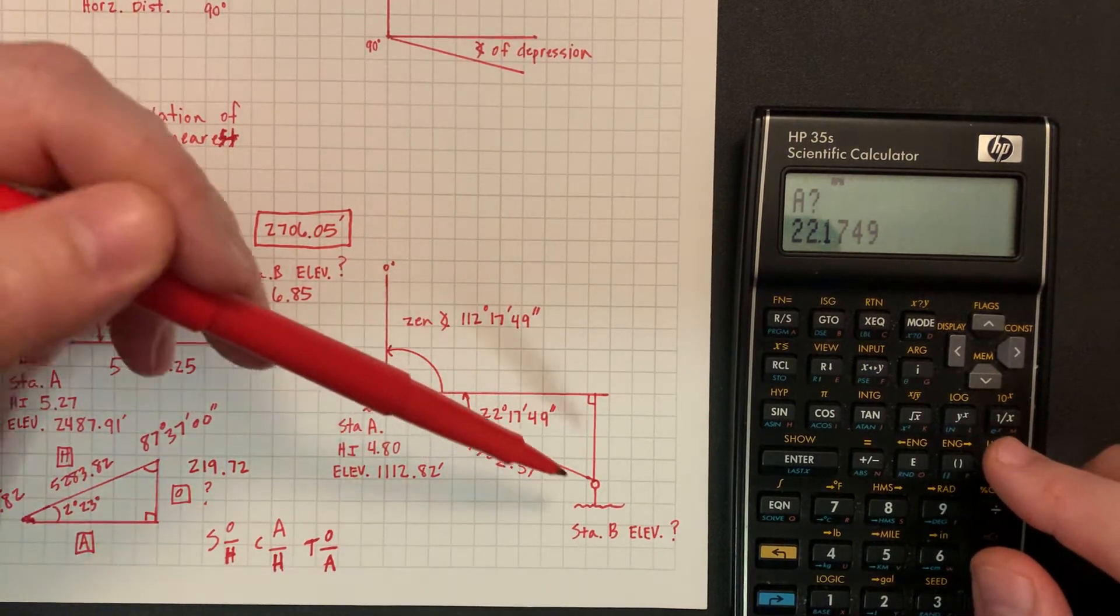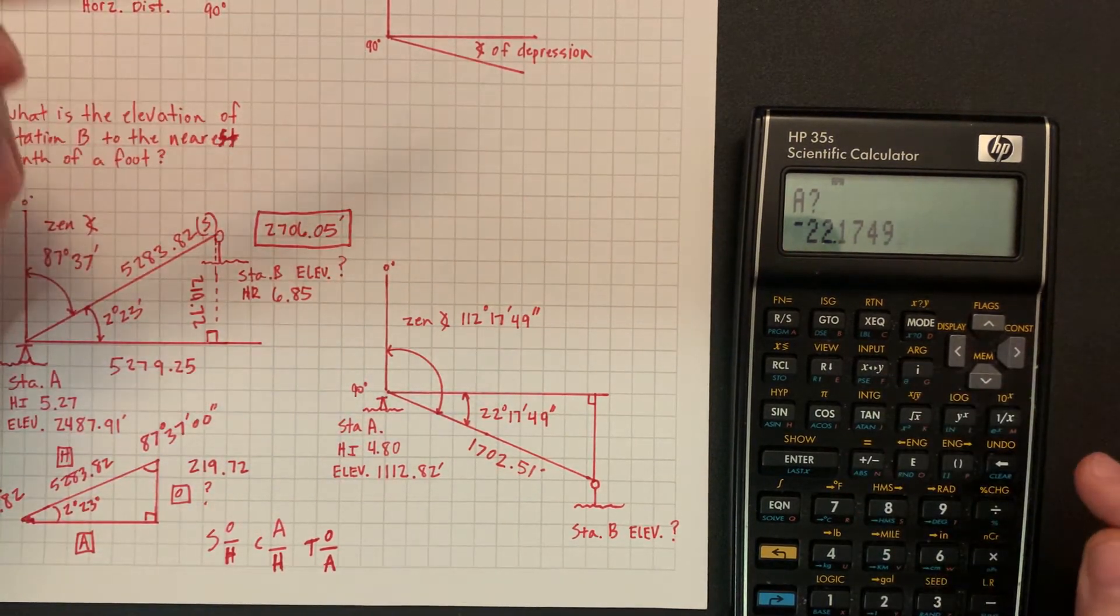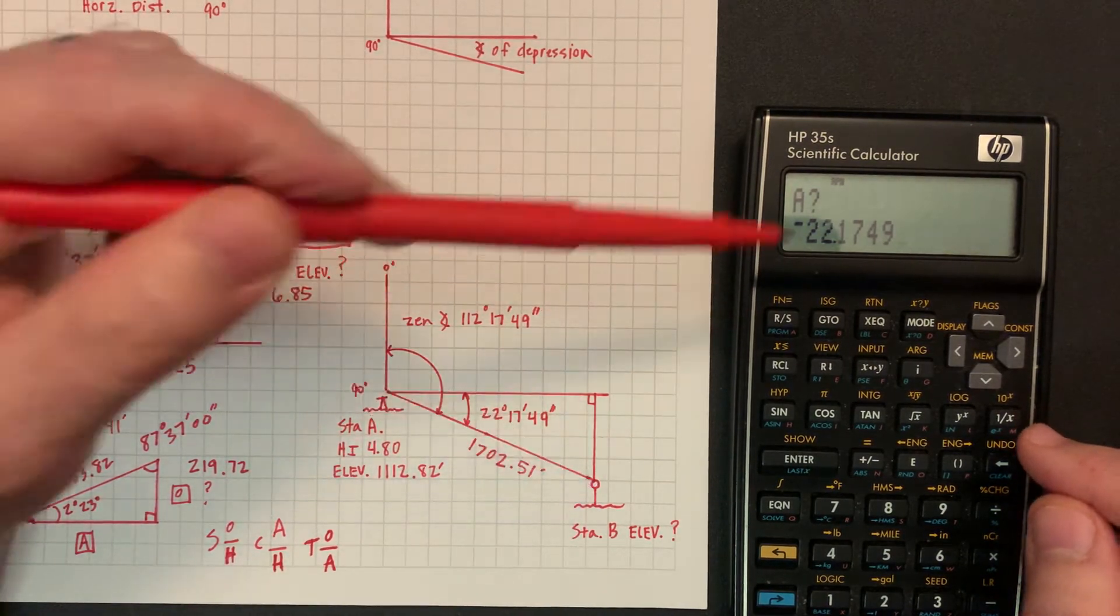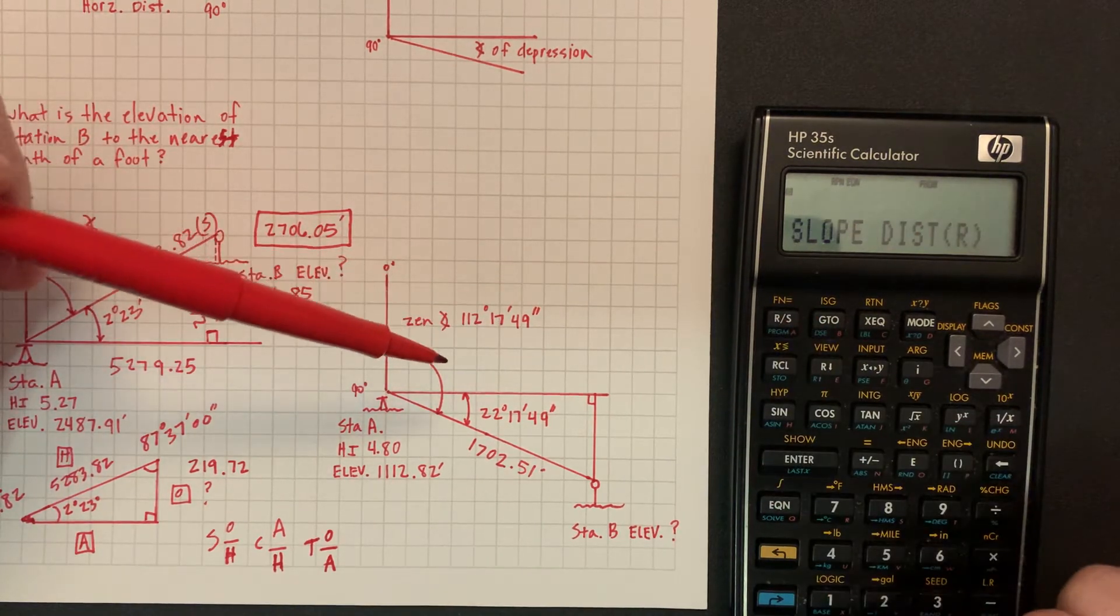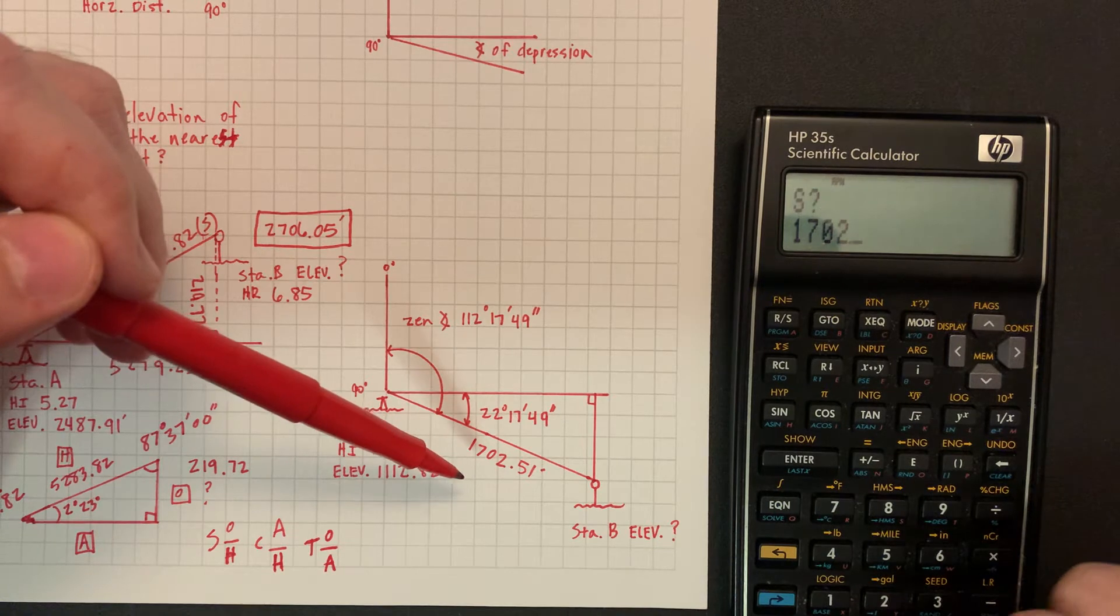And so it's angle of depression, you need to change the sign here. In this program, that's what's great about this program, it remembers that. So if you're standing here and then you're looking down, just make sure you got a negative in this slot. And it's got the same slope distance 1702.51.